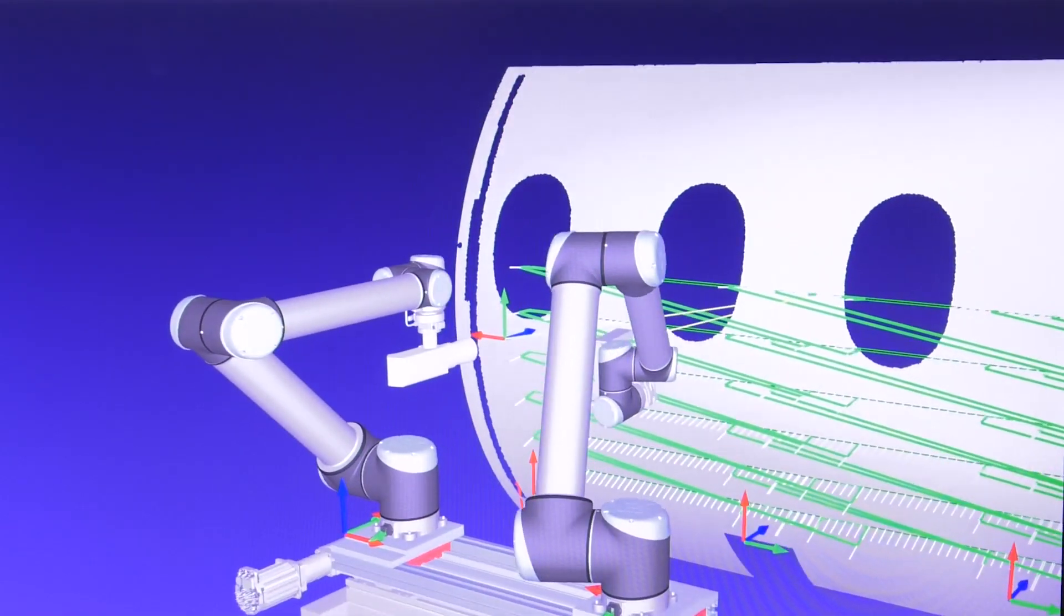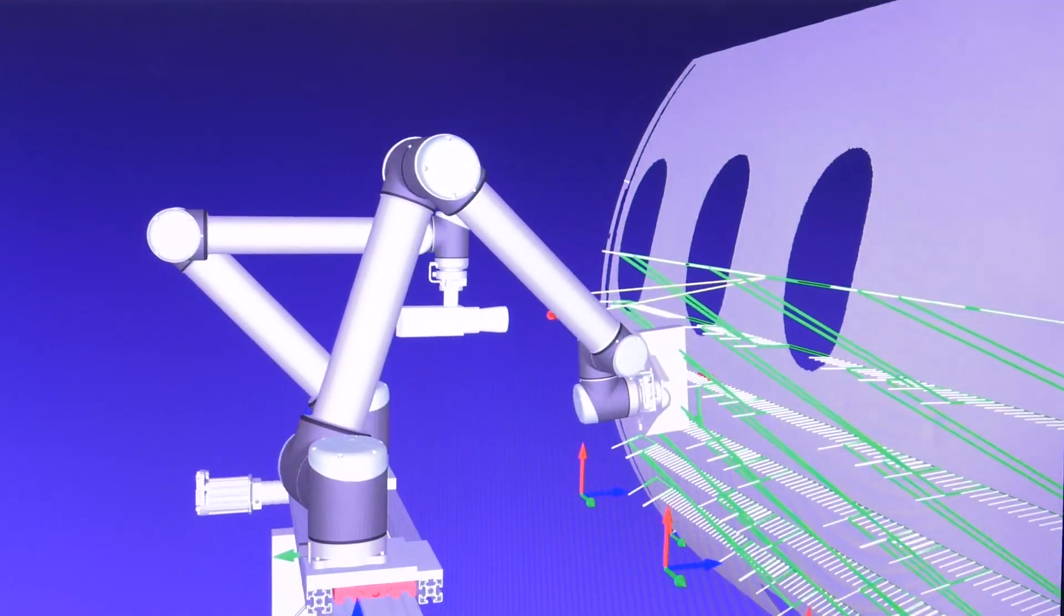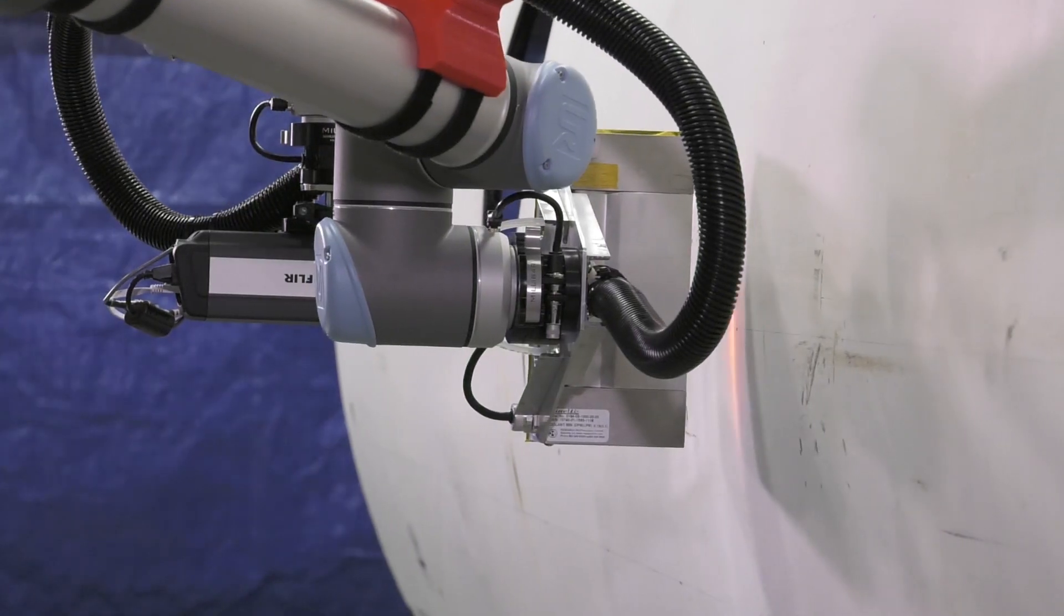The type of inspection that they're doing is what we call line scan thermography. It's different than conventional thermography where you heat a large area and then inspect one area at a time. This is actually a moving inspection that's very well suited to the use of robotics.